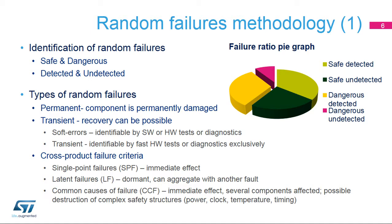For quantification purposes, safety standards recognize a safe failure fraction and diagnostic coverage. The safe failure fraction, or SFF, is the ratio of the rate of safe failures, including the rate of detected dangerous failures, to the total failure rate — covering safe failures as well as detected and undetected dangerous failures. The diagnostic coverage, or DC, is the ratio of the probability of detected dangerous failures to the probability of all dangerous failures.